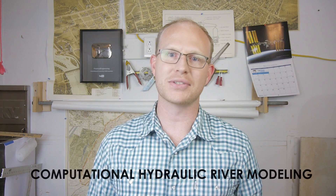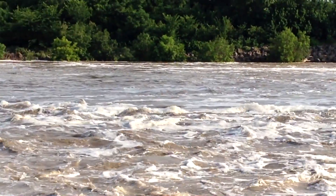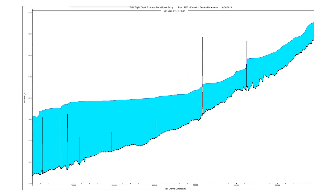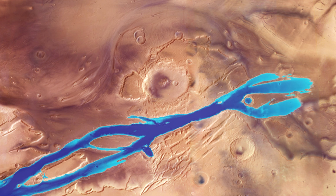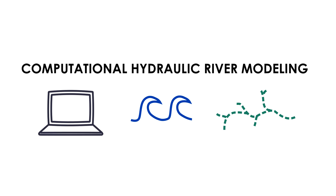I'm Grady and this is Practical Engineering. In today's video we're talking about computational hydraulic river modeling — computational because it's on a computer as opposed to a physical model like the one in Jackson, hydraulic because we're trying to understand how water moves through the system, and river model because we're creating a representation of the real world.